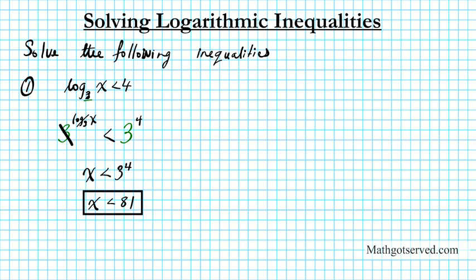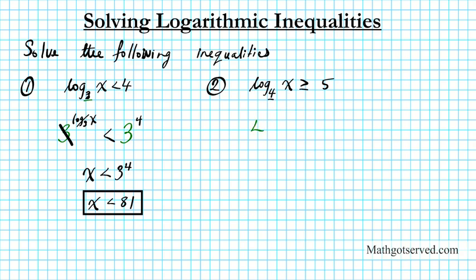Now let's move on to question number 2. We have log base 4 of x is greater than or equal to 5. It's very similar — we just identify what the base is. The base is 4. We're going to exponentiate both sides using 4 as the base: a big 4 on the left, a big 4 on the right. Then this side gets exponentiated — we have log base 4 of x.